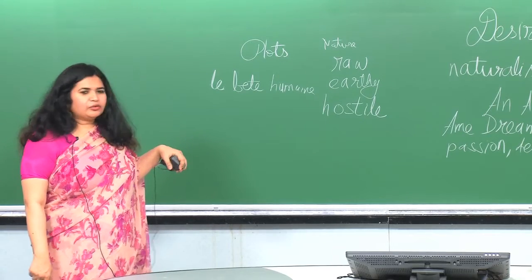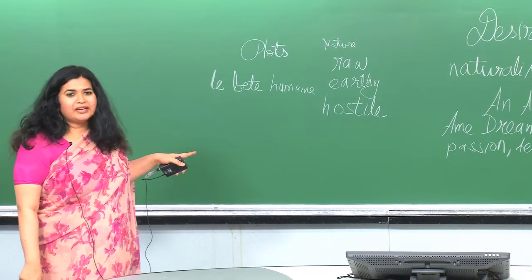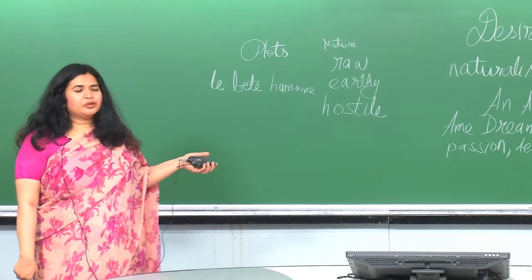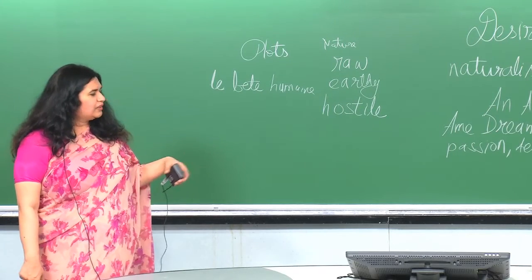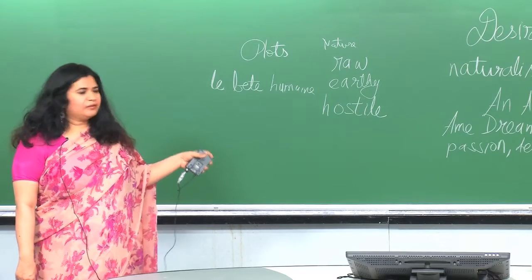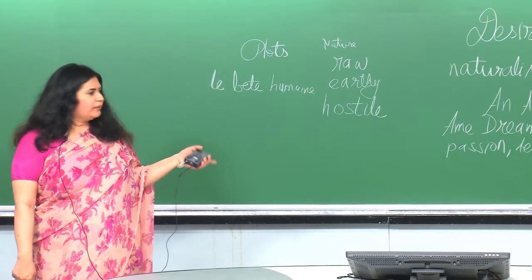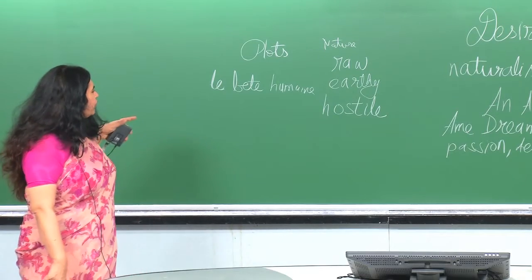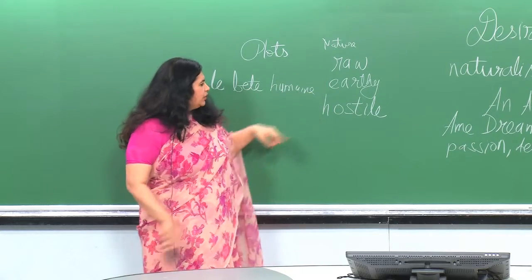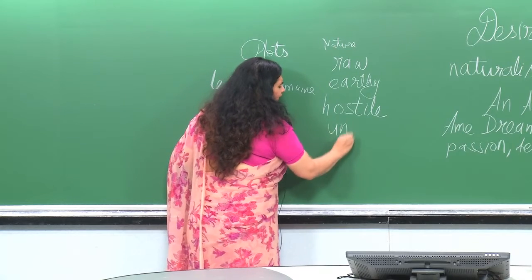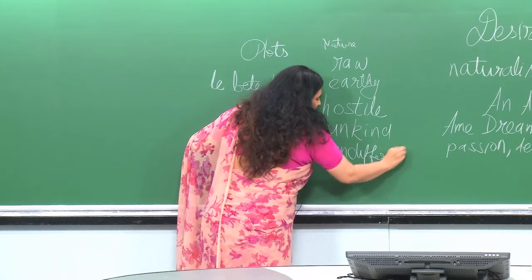We are drawing comparisons between Desire Under the Elms and An American Tragedy by Dreiser. Both were published in quick succession — 1924 and 1925 — and both deal with the American dream characterized by unbridled passion, ambition, and desires. Nature in all naturalistic works is raw, earthly, hostile, unkind, and indifferent.